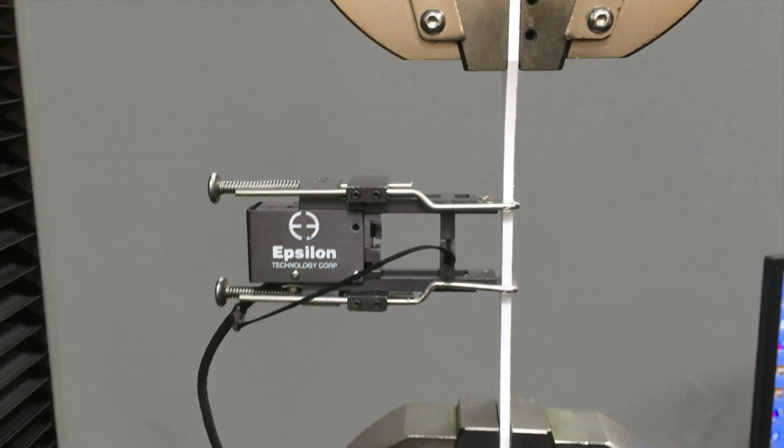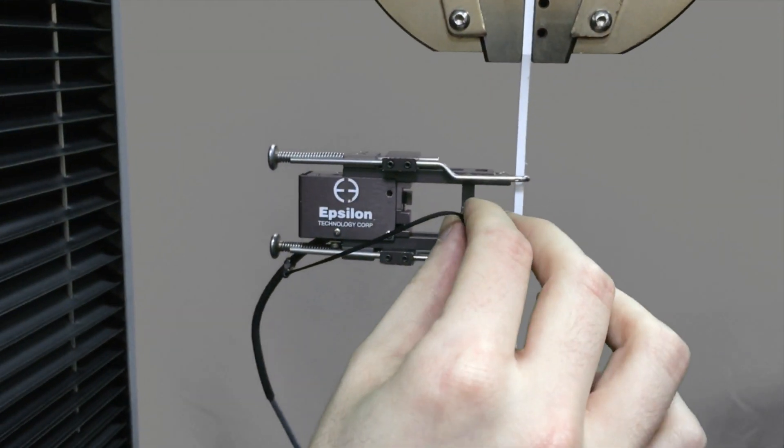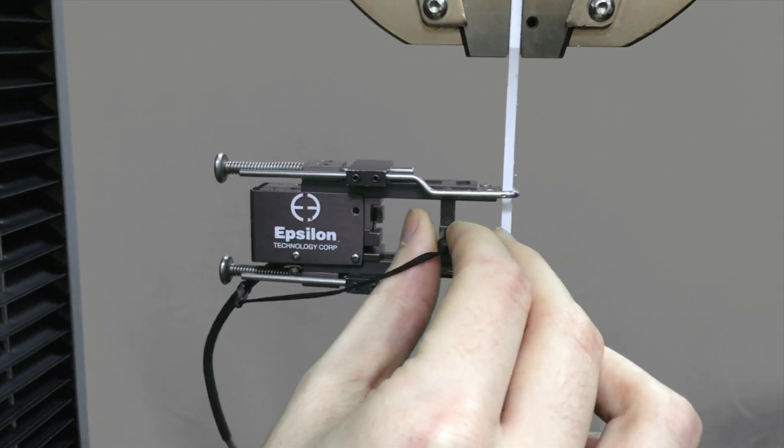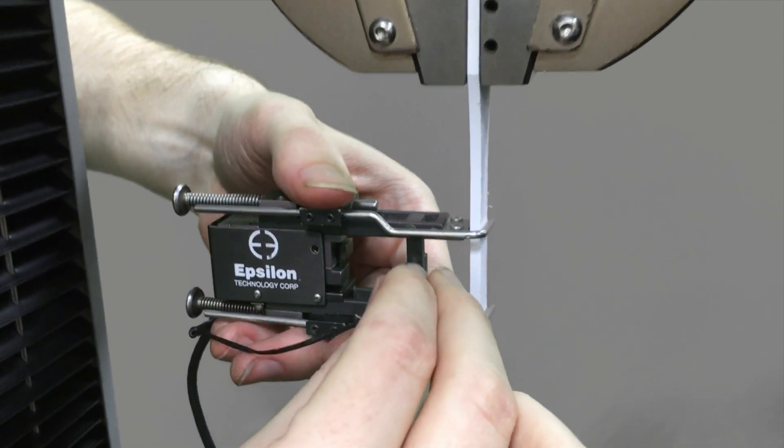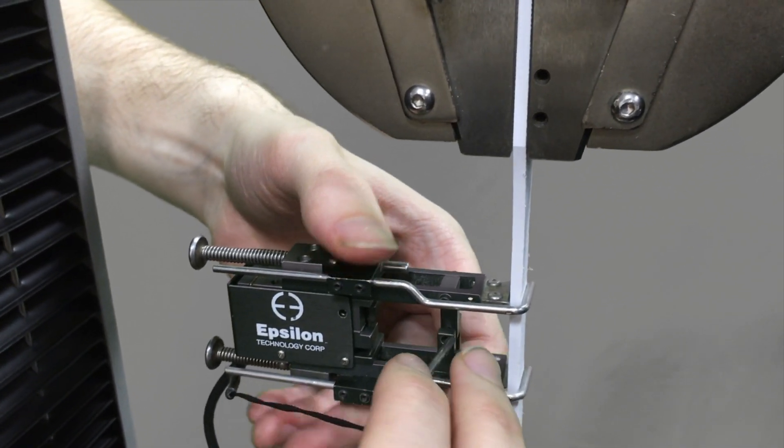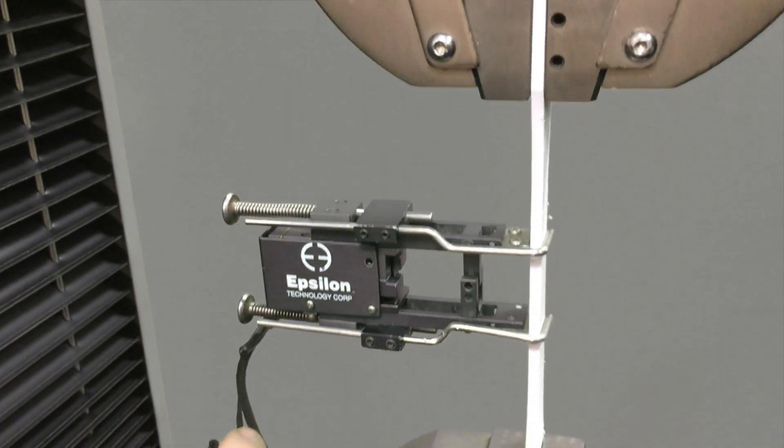Once you've done that, all you're going to do is carefully remove this pin. And now your extensometer is set at the appropriate gauge length.